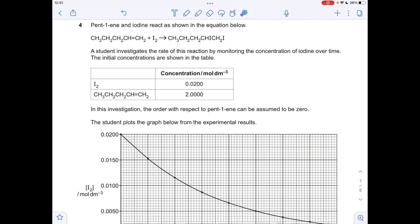So for part A we've got to explain why it's okay to assume that the order with respect to pent-1-ene is zero. Well the answer's in these concentrations. You can see that the pent-1-ene concentration is much higher than the iodine concentration. It's actually a hundred times higher. So we can say that because it's in such a large excess the order can be assumed to be zero.